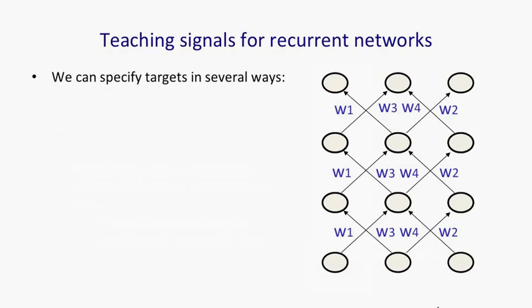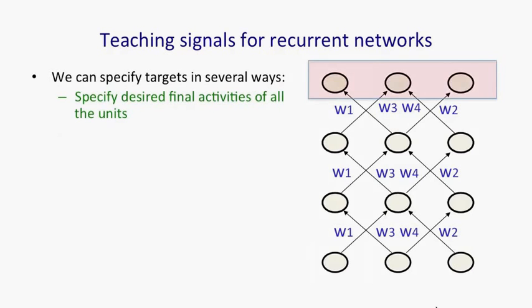Similarly, there's many ways we can specify the targets for a recurrent network. When we think of it as a feedforward network with constrained weights, the natural thing to do is to specify the desired final states for all of the units.